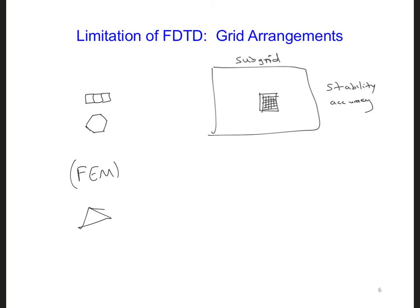For example, we might have triangles, and then we might have different sized triangles over some region.